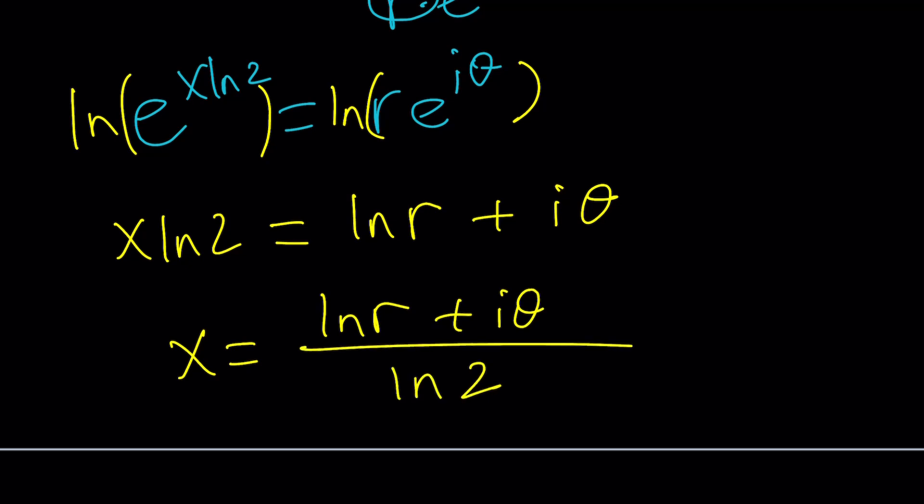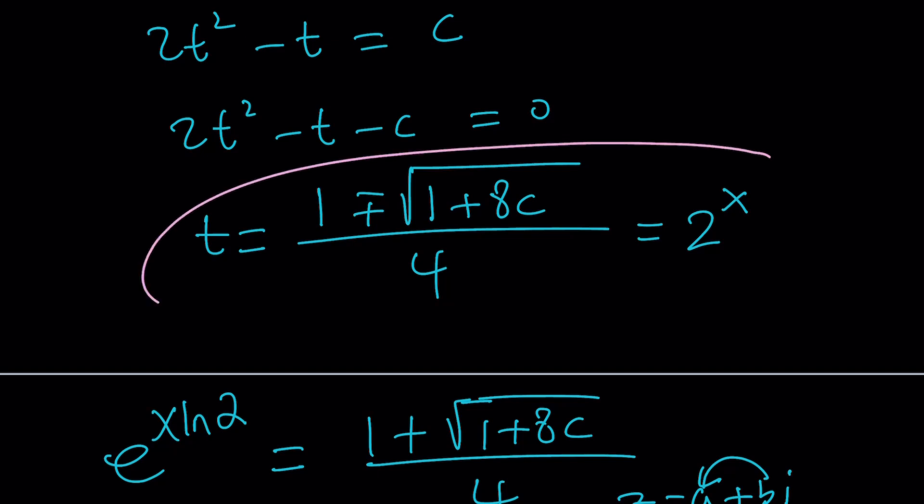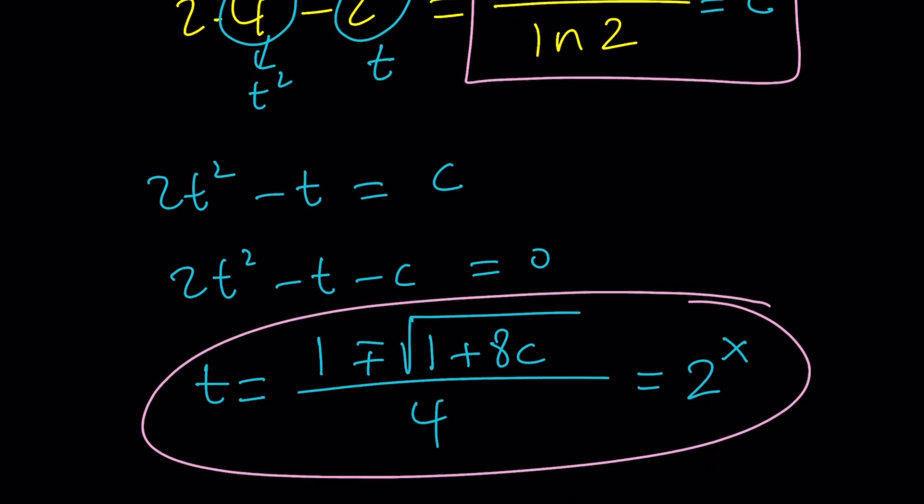Since we're looking for x, it's going to be ln r plus i theta over ln 2. Again, r and theta need to be determined from that equation. Good luck with that. But that's basically what it is. We know what t is, and we know what c is. c is a complex number, or actually an imaginary number, so you're just going to have to plug it in and work with it.